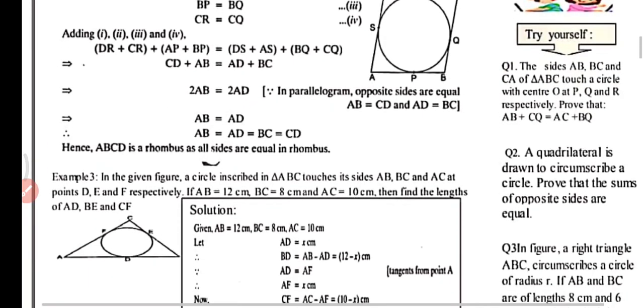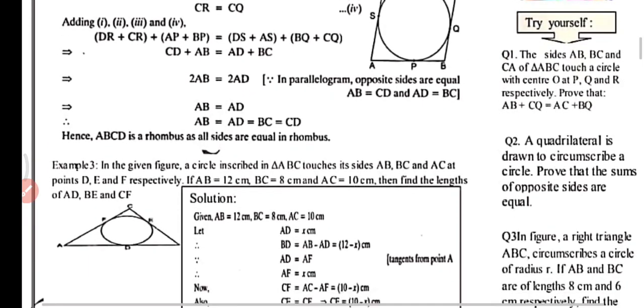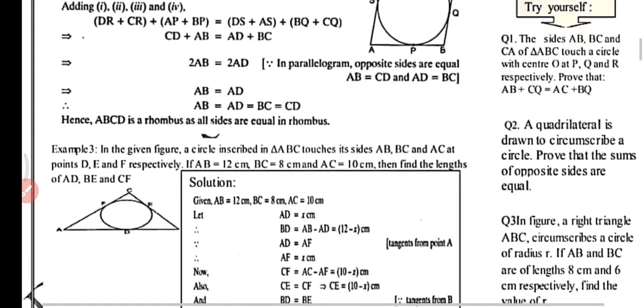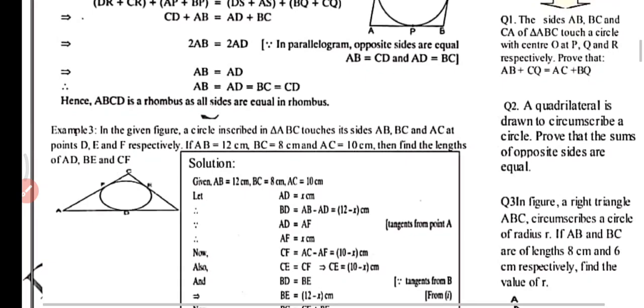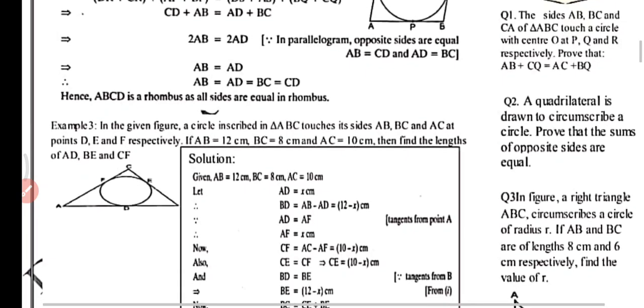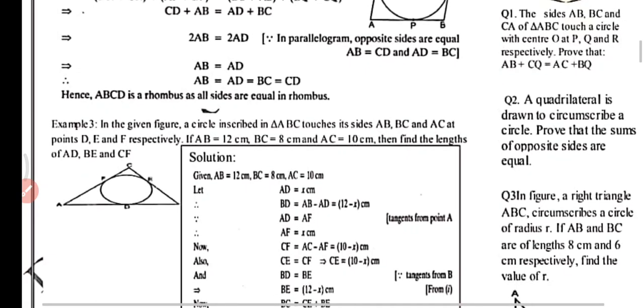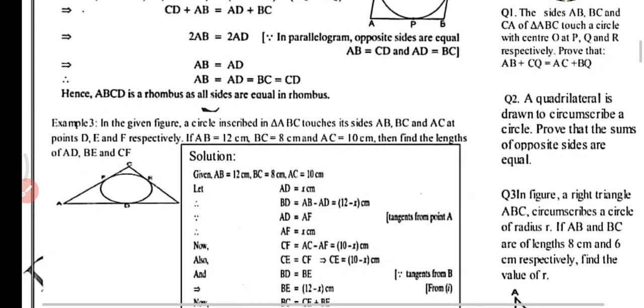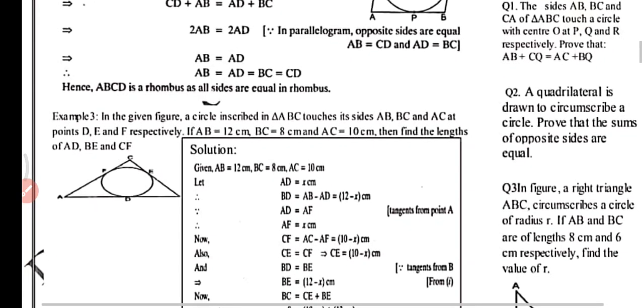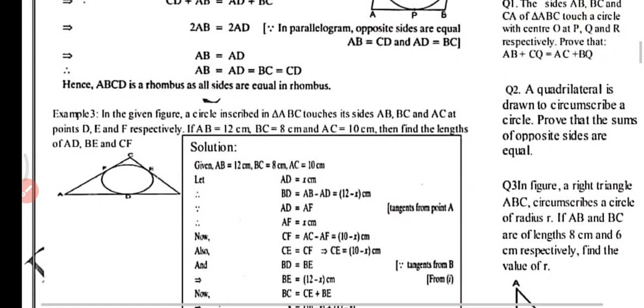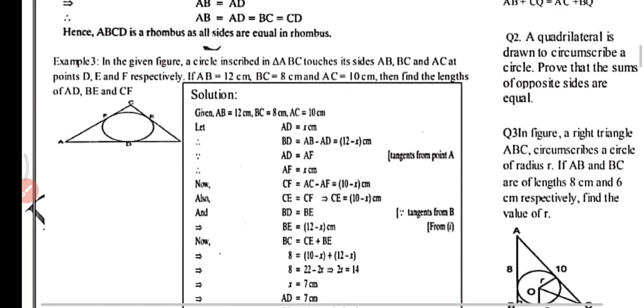Now for practice question number one: the sides AB, BC, and CA of triangle ABC touch a circle with center O at P, Q, and R respectively. Prove that AB plus CQ equals AC plus BQ.